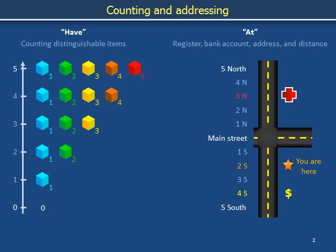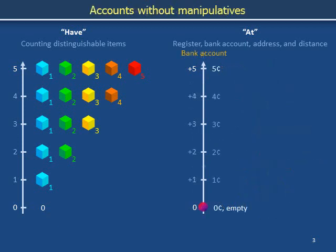In mathematical work, we often replace Main Street with 0, 'at north' with plus, and we say minus or negative instead of saying south. The idea of 'at' is useful beyond the context of literal geography.